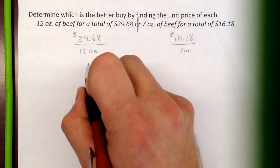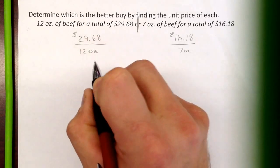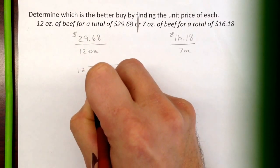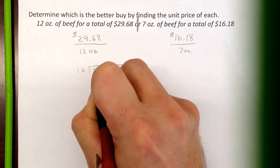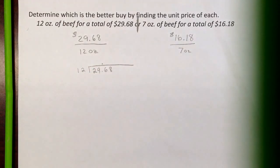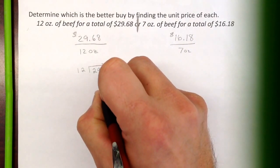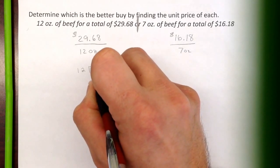We'll start by taking this first one and dividing this by this. So the 12 goes outside, and the 29.68 goes inside. We want to get this to the nearest penny, so we're going to go three decimal places and round to the nearest hundredth. So start dividing. 29 divided by 12 goes in, what, two times?